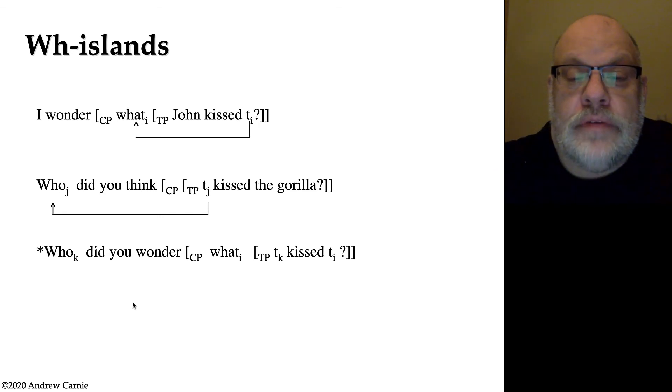But once again, what we find is that if you try to do both of these movements, what it results in is an ungrammatical sentence. So if we move the what word into the embedded clause, like the first sentence, and we move the who word into the CP of the higher clause, as in the second sentence, what you get is, who do you wonder what kissed? Which is a very strange sentence indeed.